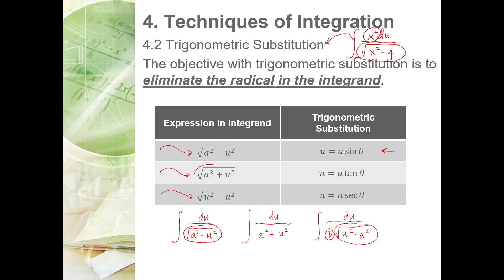The second expression is the square root of a squared plus u squared, comparable to the arc tangent formula except it has the radical expression. Its corresponding trig substitution uses the tangent function, not inverse tangent. The third is the square root of u squared minus a squared, corresponding to the secant function, not inverse secant. These substitutions apply when you cannot achieve the inverse trig format.